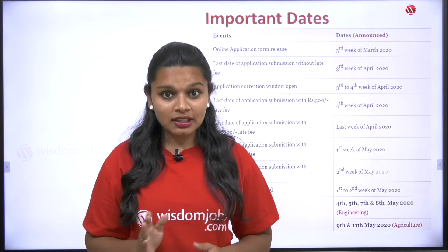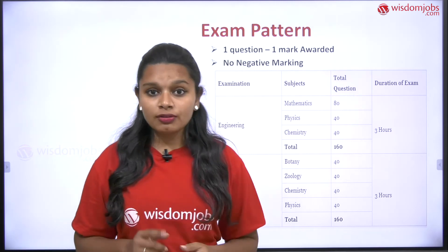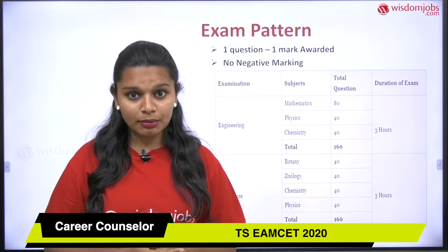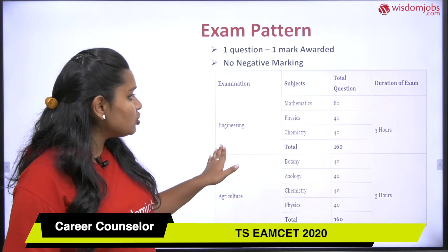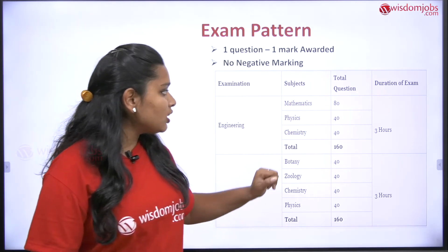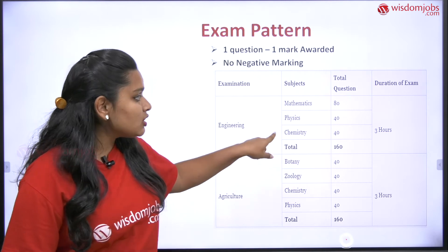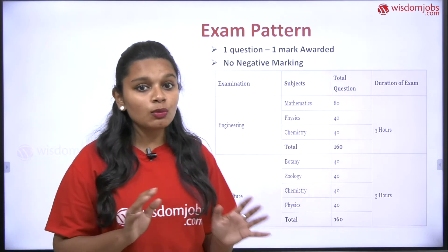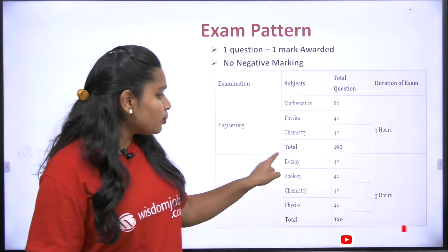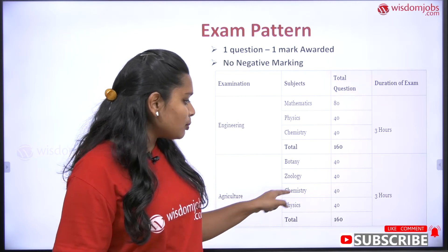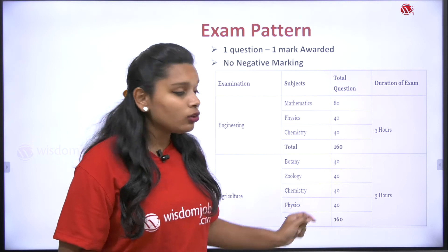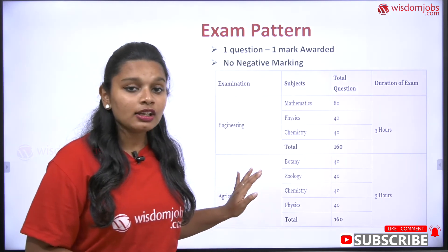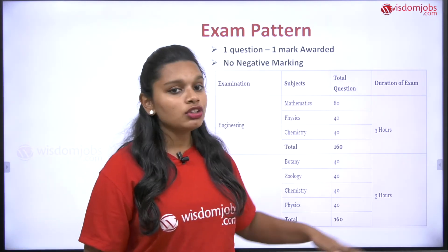Coming to the examination pattern: one question carries one mark, and there is no negative marking, unlike NEET and AIIMS examinations. For Engineering, the subjects are Mathematics, Physics and Chemistry. Mathematics contains 80 questions, Physics 40 questions, and Chemistry 40 questions — totaling 160 questions and 160 marks. For Agriculture, Botany has 40 questions, Zoology 40, Chemistry 40, and Physics 40 — also totaling 160 questions and 160 marks. The duration for both Engineering and Agriculture streams is three hours.